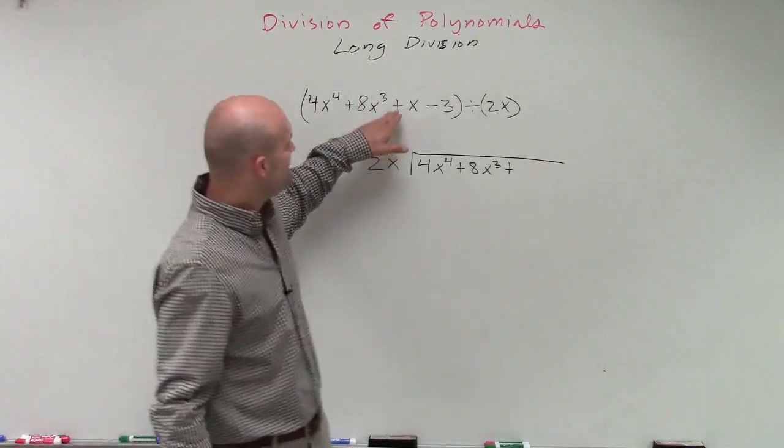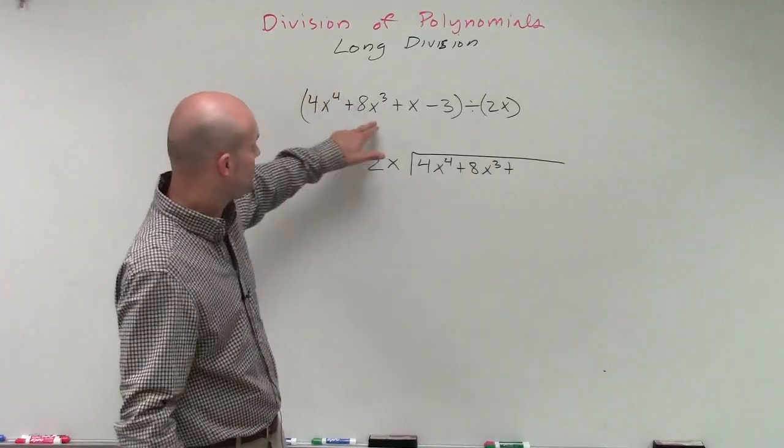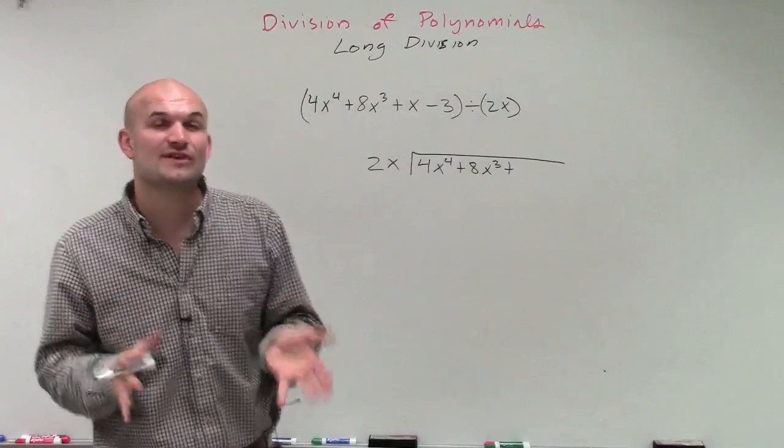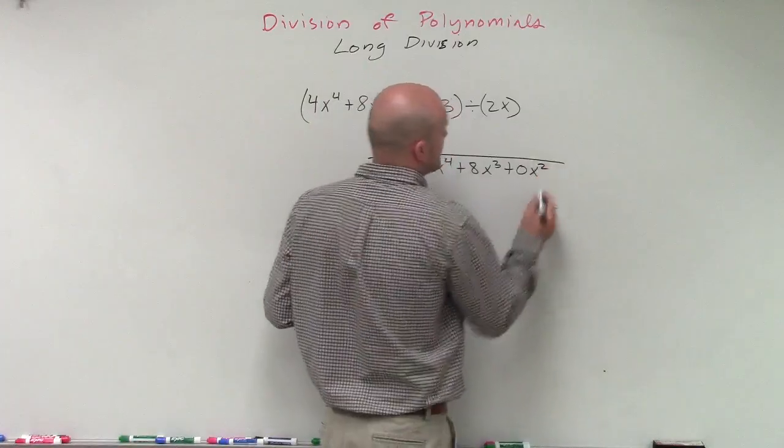I forgot one last thing. If you notice, if I'm taking this polynomial and going down in descending order, I have x to the fourth, x cubed, but I don't have an x squared. And when you're first learning long division, it's probably going to be very helpful for you to include a 0x squared.